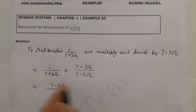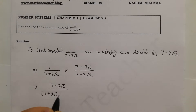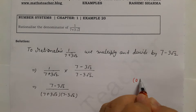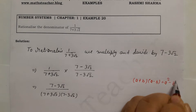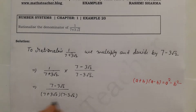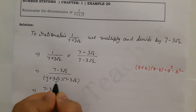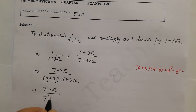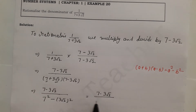In the denominator we use the identity: a plus b times a minus b equals a squared minus b squared. Here a is 7 plus 3 root 2 and b is 3 root 2, so the denominator becomes a squared minus b squared, which is 7 squared minus 3 root 2 squared.